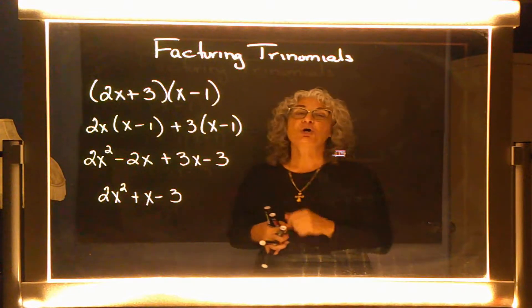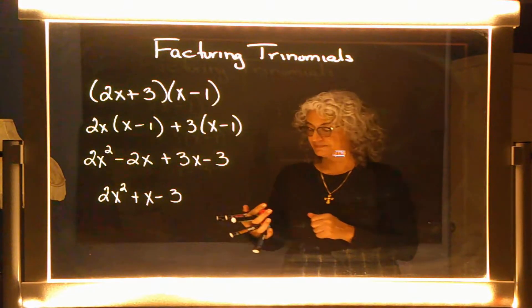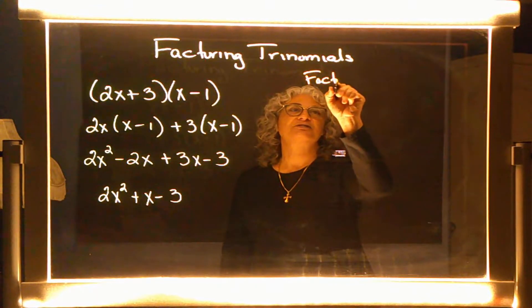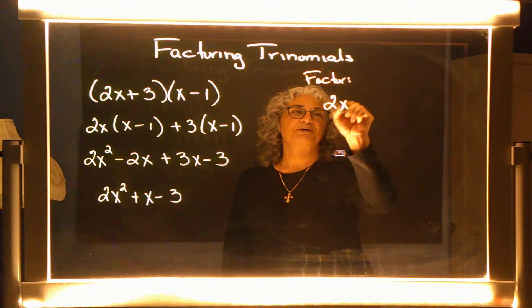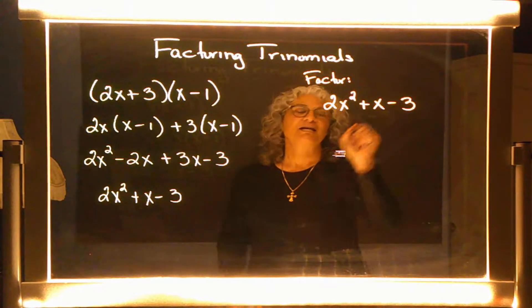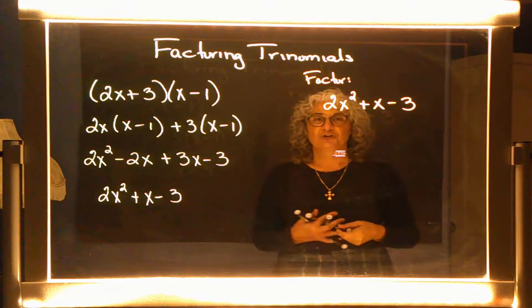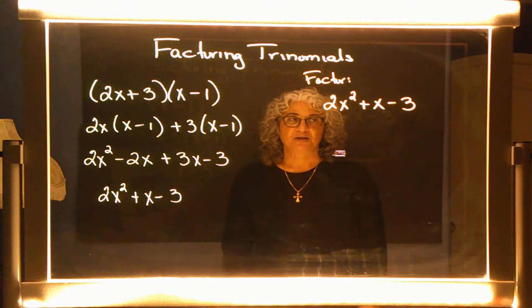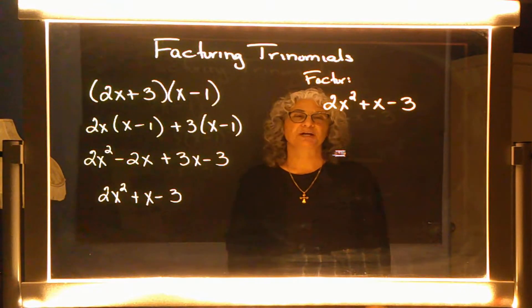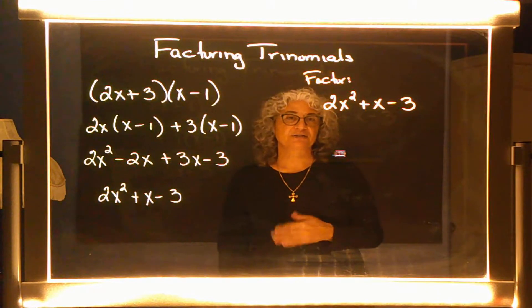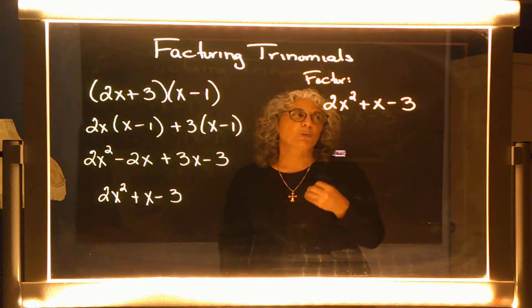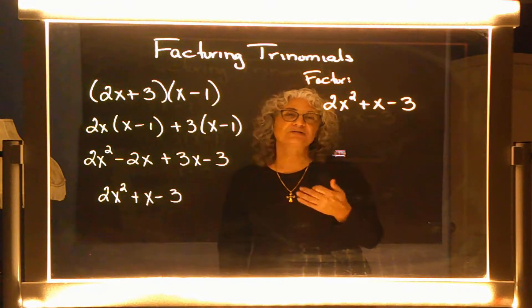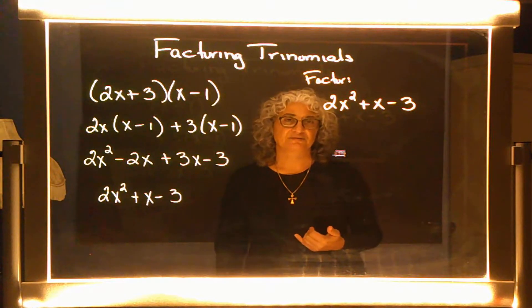Now we're going to go backwards. I want to factor this algebraic expression, so I need to go from the answer to the original multiplication problem. Remember, based on the last lecture, we're really doing one factoring step — asking ourselves what is in common, what is the greatest common factor, what can I divide out?